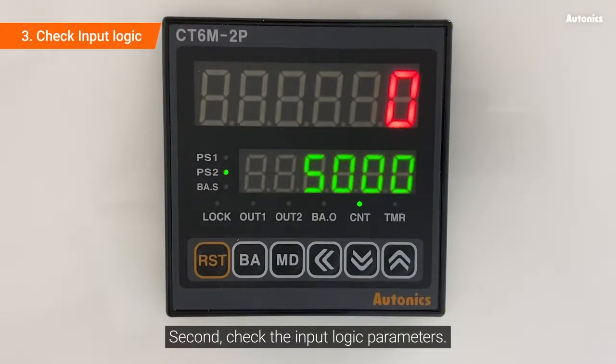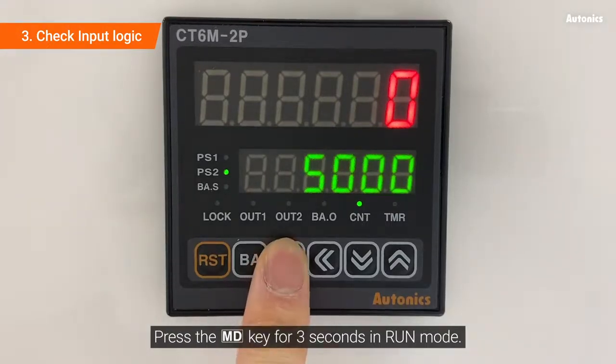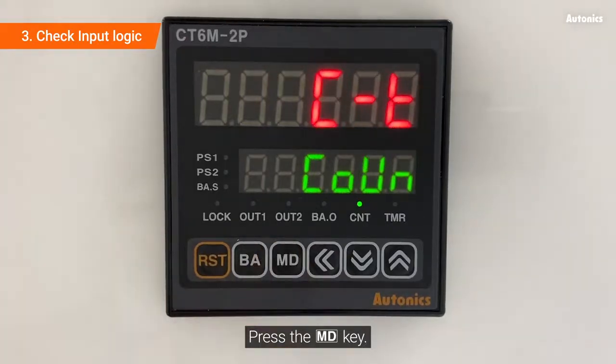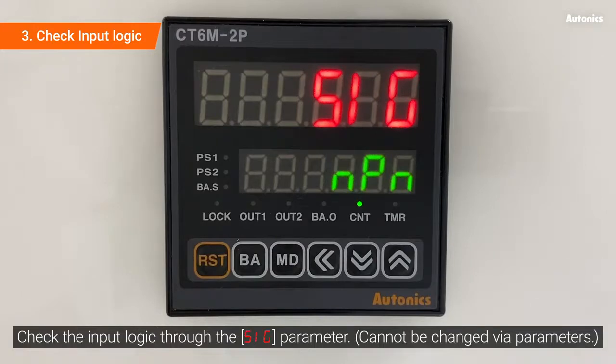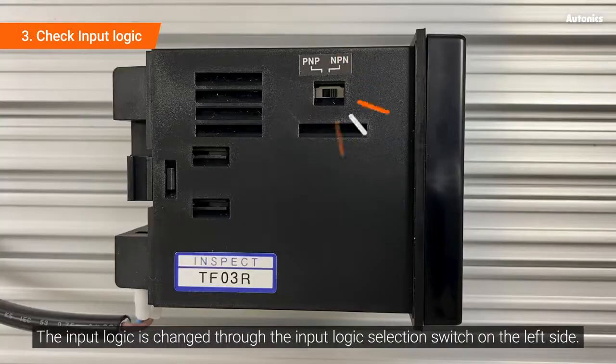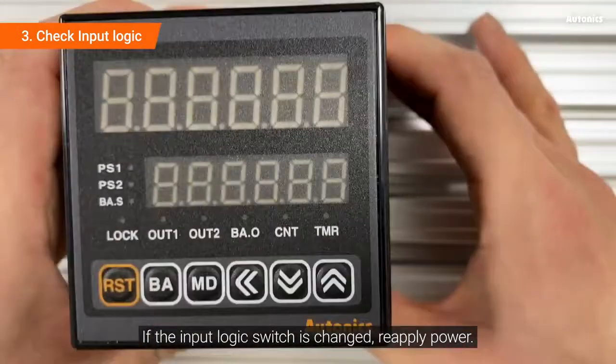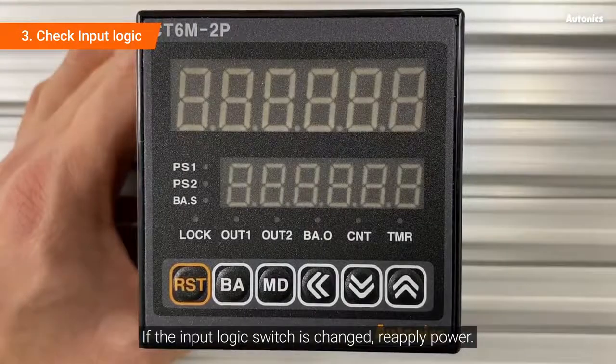Second, check the input logic parameter. Press the MD key for 3 seconds in run mode. Press the MD key. Check the input logic through the SIG parameter. The input logic is changed through the input logic selection switch on the left side. If the input logic switch is changed, reapply power.